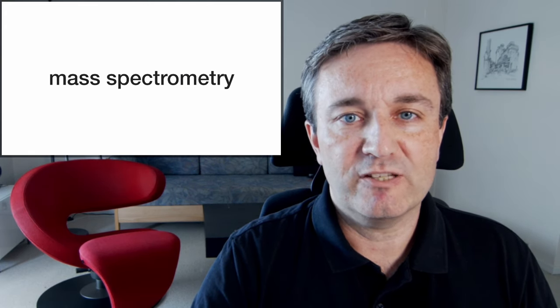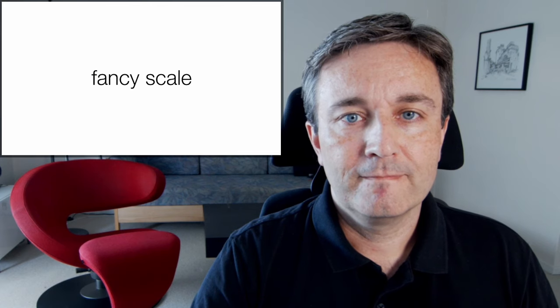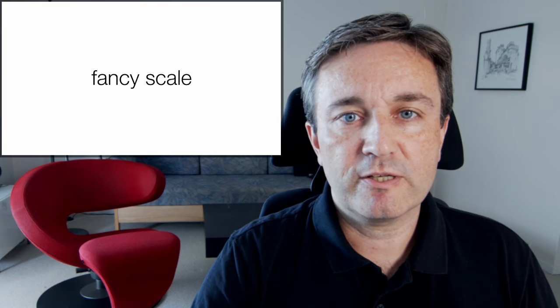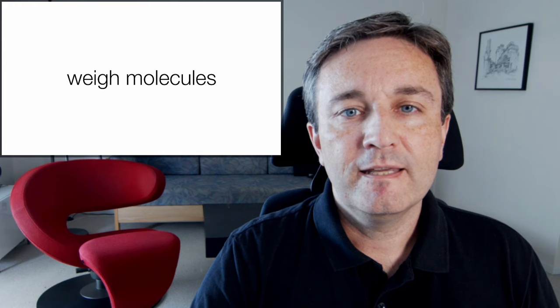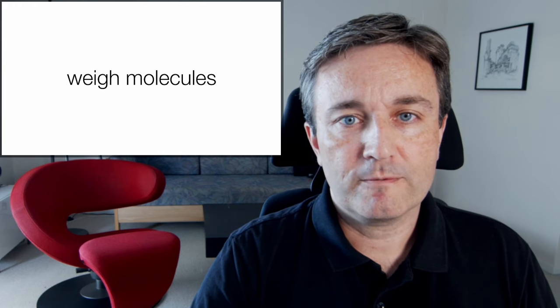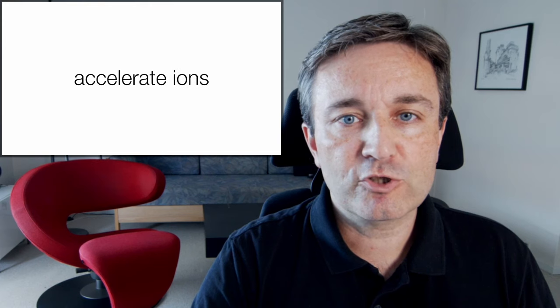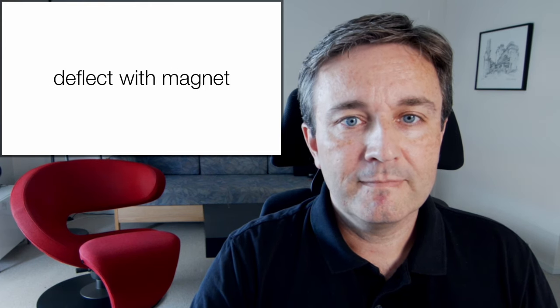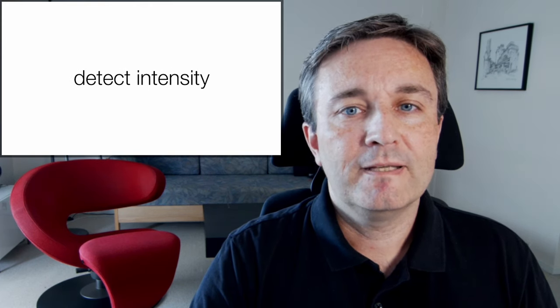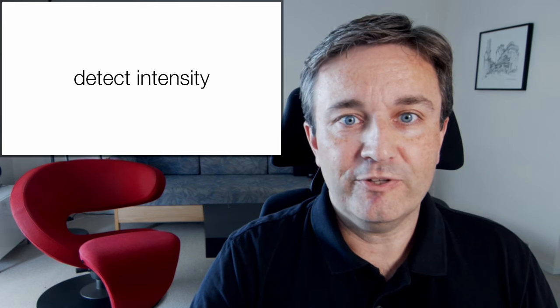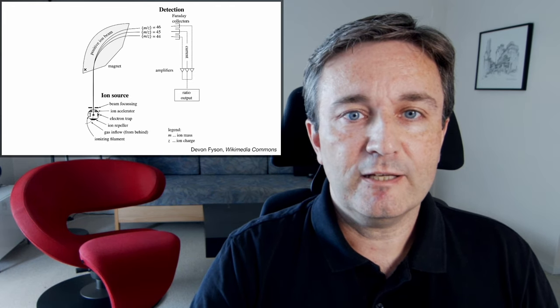I've mentioned mass spectrometry many times, but what is it? Fundamentally, a mass spectrometer is nothing but a fancy scale. It allows you to weigh molecules. The way this is done in practice is that you ionize the molecules, then accelerate them, deflect them with a magnet, and detect the intensity of the ions.